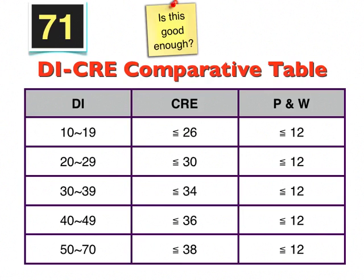But when you have a case with a DI of 30 to 39, it is considered very difficult, and you will be allowed to lose 34 points. Once you get into a very difficult case — like a DI of 71 in this case — you will be allowed to lose 38 points. In this case, we lost 37, which is still considered within the acceptable standard for this difficulty level.